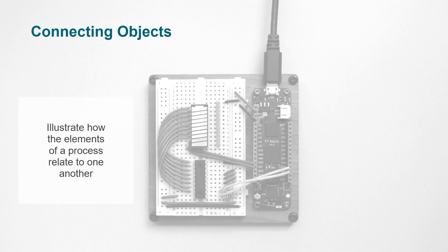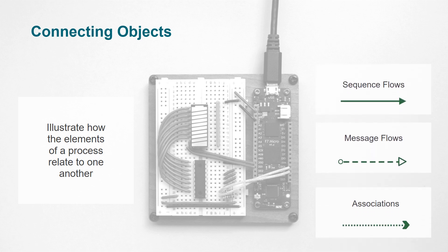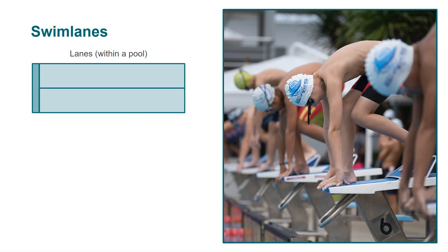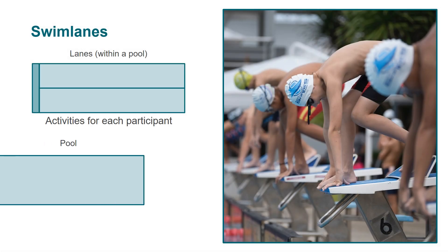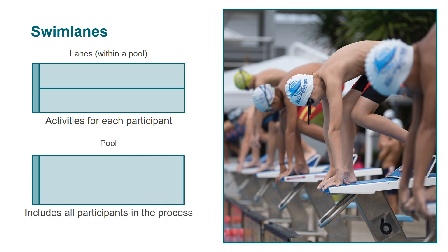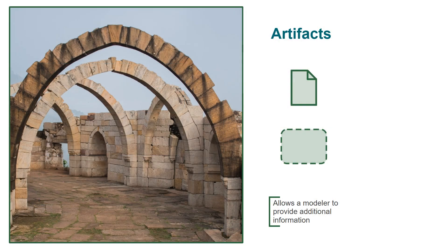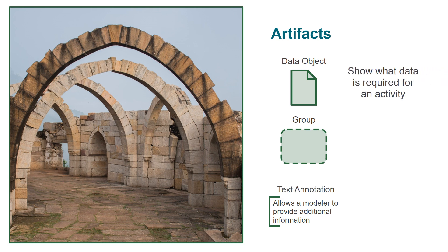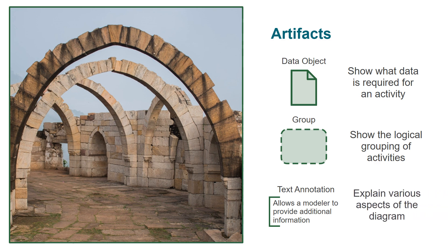Connecting objects illustrate how the elements of a process relate to one another. There are three types of connecting objects: sequence flows, message flows, and associations. Swim lanes show the activities for each participant and make up a pool that includes all participants in the process. Artifacts are used to provide additional information about a process. There are three types of artifacts: data object, group, and annotations. Data objects show what data is required for an activity. Groups show the logical grouping of activities. Annotations are used to explain various aspects of a diagram.